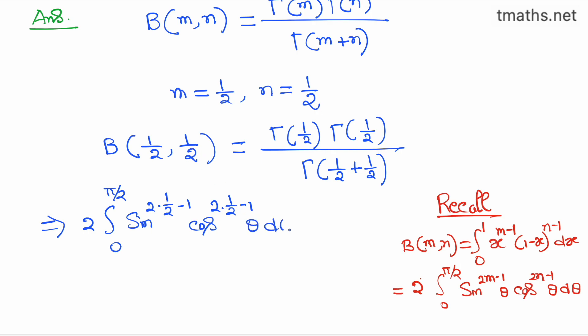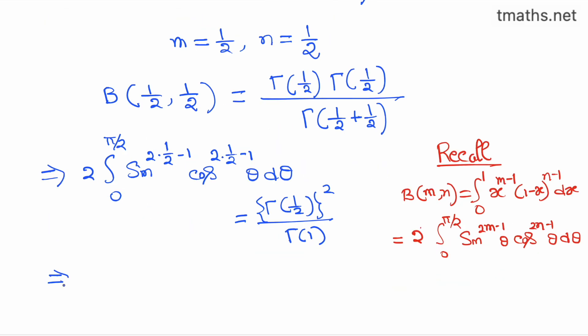is equal to gamma half whole square divided by gamma of 1. Now, if we simplify the left hand side,